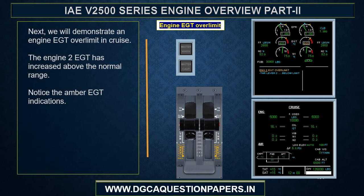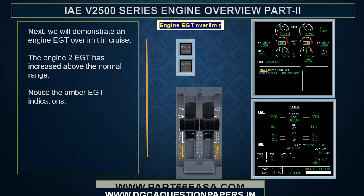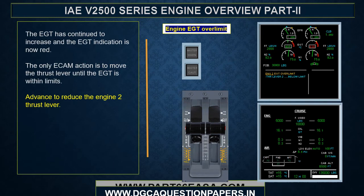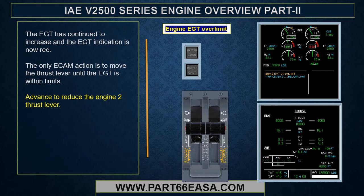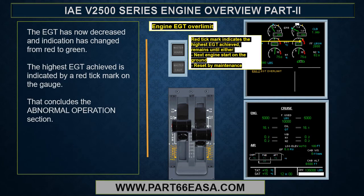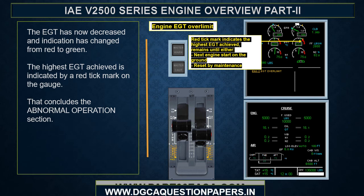Next, we will demonstrate an engine EGT over limit in cruise. Engine 2 EGT has increased above the normal range — notice the amber EGT indications. The EGT has continued to increase and the EGT indication is now red. The only ECAM action is to move the thrust lever until the EGT is within limits. After reducing the engine 2 thrust lever, the EGT decreases and the indication changes from red to green. The highest EGT achieved is indicated by a red tick mark on the gauge. That concludes the abnormal operation section.